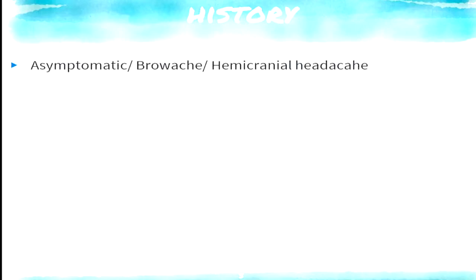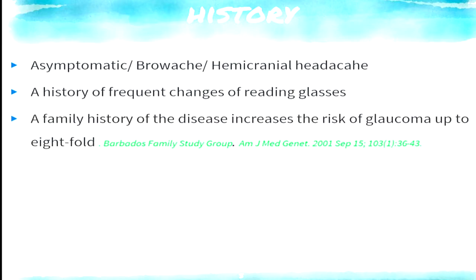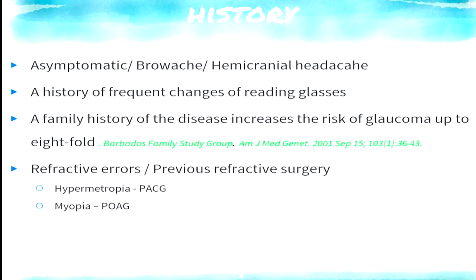First and foremost, the history part is extremely important. In glaucoma, you might not be getting any symptoms. In primary open-angle glaucoma, there might not be any symptoms, or maybe some brow ache or hemicranial headache. There might be history of frequent change of near glasses. Family history of glaucoma is also very important, and refractive errors might be associated with glaucoma, so you need to ask patients regarding their spectacles.